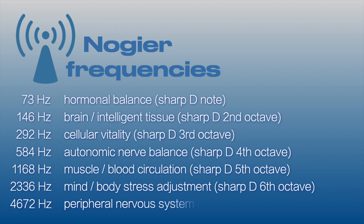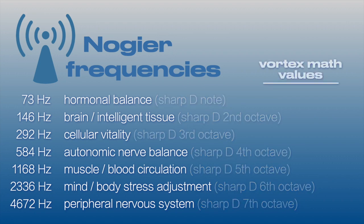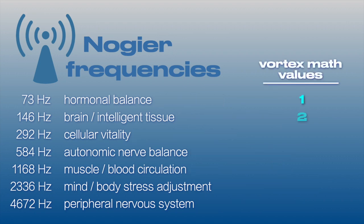What's really striking about these seven frequencies is the value of each in vortex math. As you can see, these seven octave frequencies obey the doubling power of 2, in the order it's expressed on the Mobius circuit, 1, 2, 4, 8, 7, 5, and then returning again to 1.